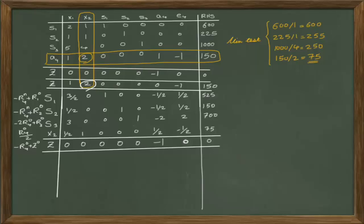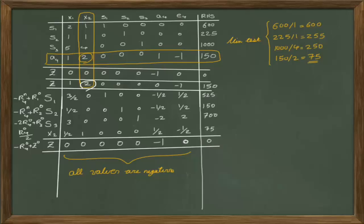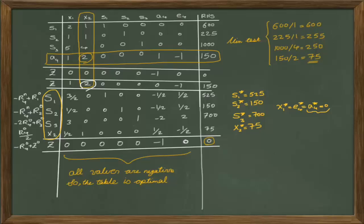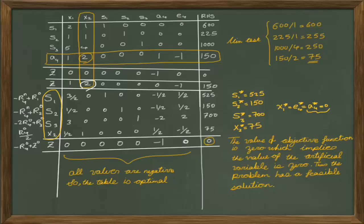Let's check the optimality condition. In phase 1, we always solve a minimization problem, so we reach an optimal table when all coefficients in the row of z are 0 or negative. All values here are negative or 0, so we have reached the optimality condition — the table is optimal. In this table, there is no artificial variable in the basis, meaning A4 is a non-basic variable with a value of 0. Therefore, z equals A4 equals 0, which implies the problem has a feasible solution.